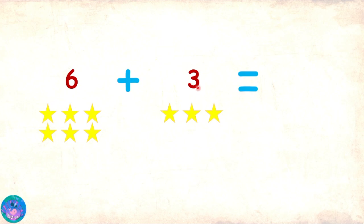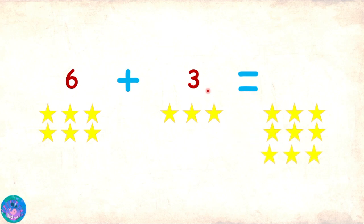Now, what will that be equal to? To do the addition, we will have to bring them together and then count them together. One, two, three, four, five, six, seven, eight, nine. So six stars plus three stars is equal to nine stars. So that would mean that six plus three is equal to nine.